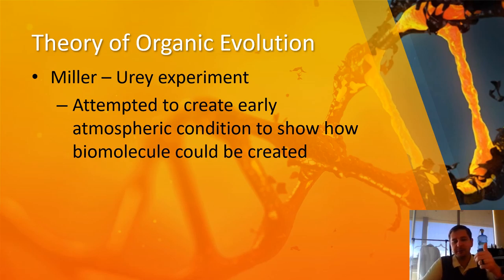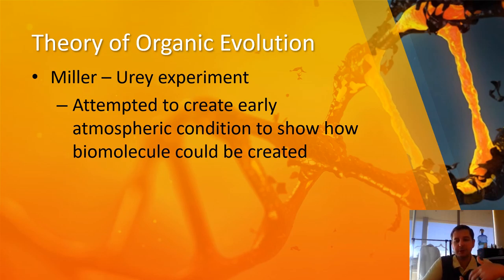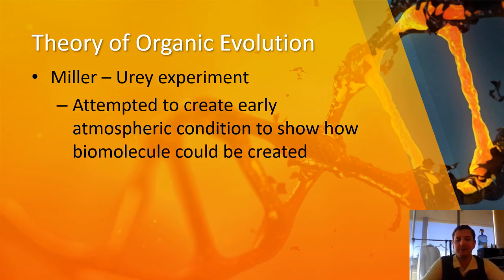Alright, next one. So we've covered the three homologues we're trying to go over, and they're all related using the order that these scientific terms were developed. This one is the Miller-Urey experiment from the 1940s and 1950s, post World War Two. Their experiment attempted to create the theoretical atmospheric conditions — they didn't actually know what they were; nobody was there.